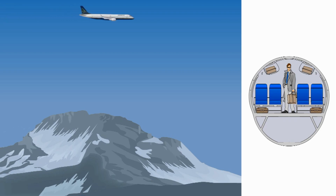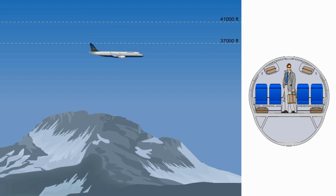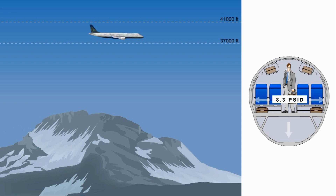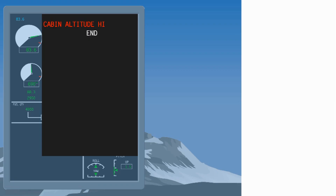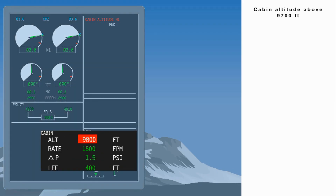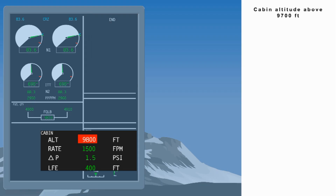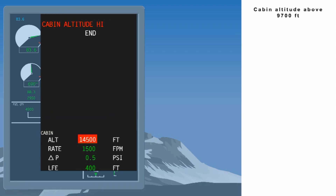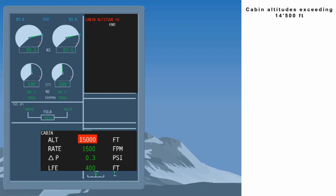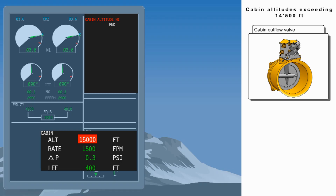The cabin pressure control system operates for aircraft ceilings up to 41,000 feet. During cruise below 37,000 feet, the nominal differential pressure will be limited to 7.8 PSID, while cruising above 37,000 feet will limit the differential pressure to 8.3 PSID. As a result, maximum cabin altitude at aircraft ceiling is limited to 8,000 feet. A cabin altitude high warning is generated whenever the cabin altitude rises above 9,700 feet. Note: in case of high airfield operation, the warning will be active for a cabin altitude of 500 feet above takeoff field elevation. For cabin altitudes exceeding 14,500 feet, the outflow valve will close automatically to prevent the cabin from climbing further.